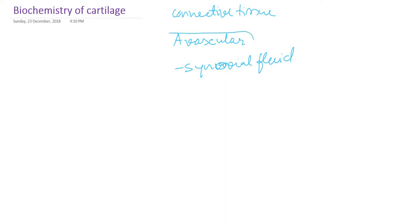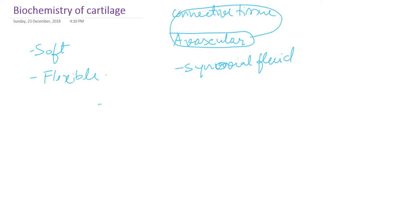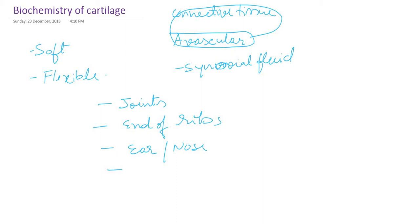Cartilage is an avascular connective tissue and it is softer and more flexible, whereas bone is a mineralized connective tissue — it is hard and not flexible. We see cartilage in almost all joints, at the ends of ribs, in the nose, between the vertebrae or spine, and even in the airways such as the bronchial tubes.